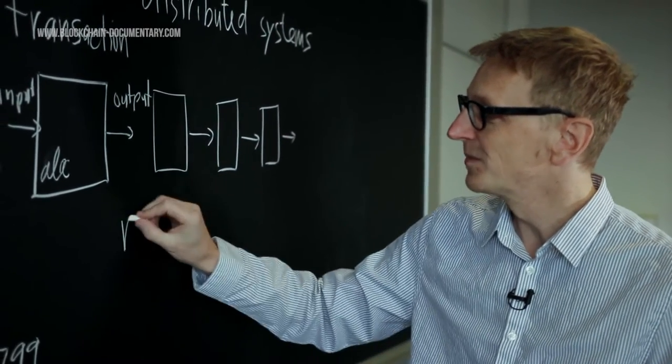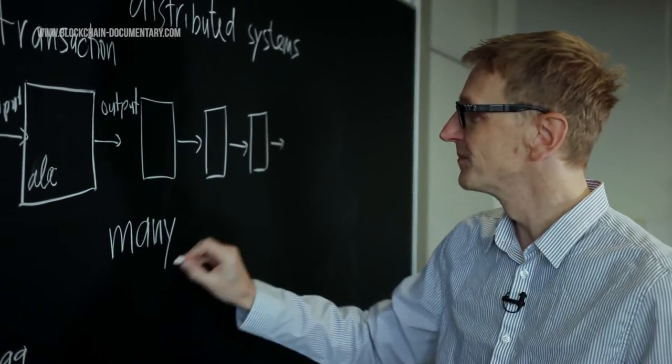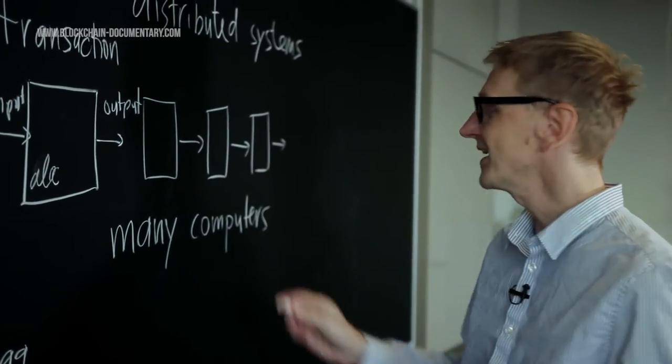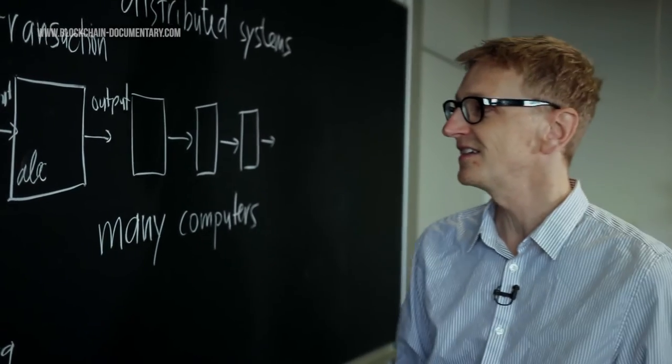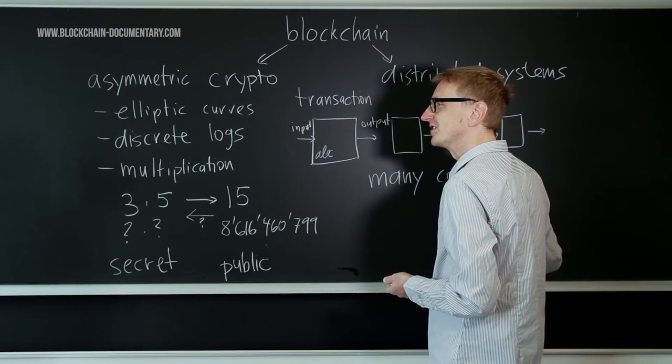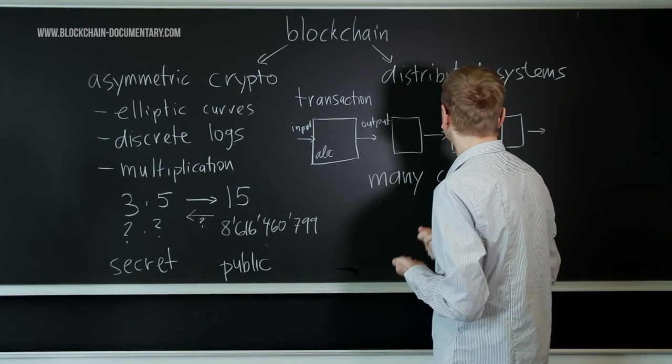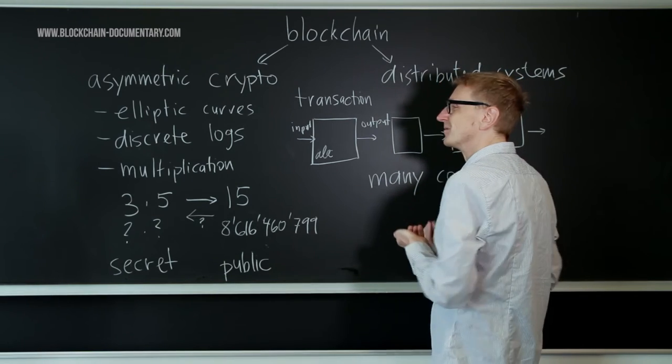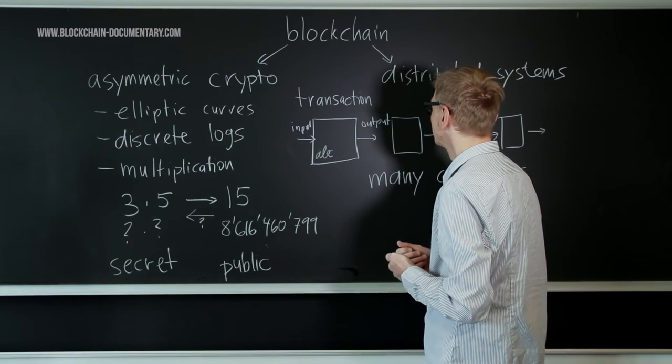So what you do here is you basically use many machines, many computers which are connected by some kind of network like the internet. And together they make sure that even if some of them are really bad computers that maliciously want to destroy the system, that the good guys, in some sense, are in majority and they can prevent this.